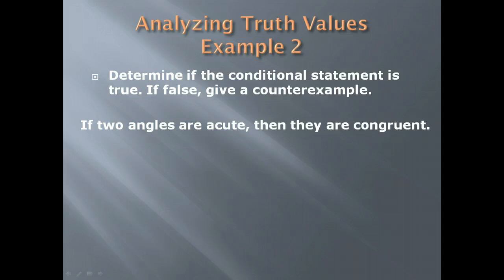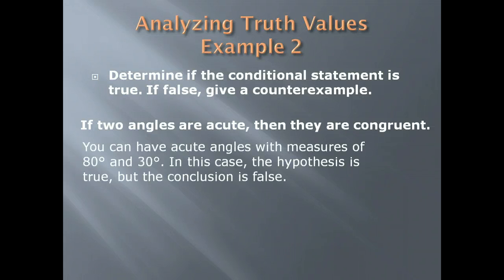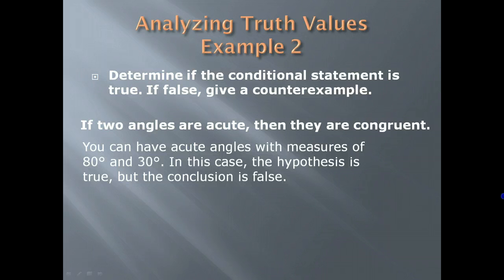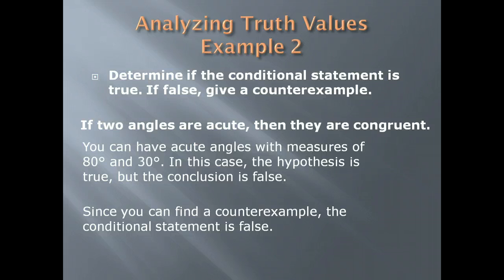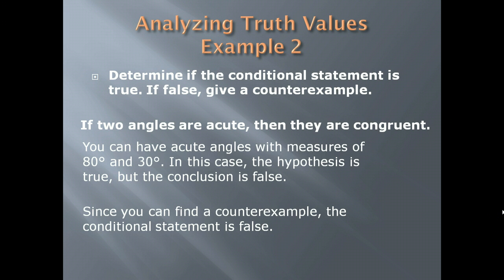Next: If two angles are acute, then they are congruent. Remember that acute angles measure less than 90 degrees. If we pick any two acute angles, such as 80° and 30°, we have a true hypothesis because both are acute angles, but they are not congruent. Since you can find a counterexample, the conditional statement is false.